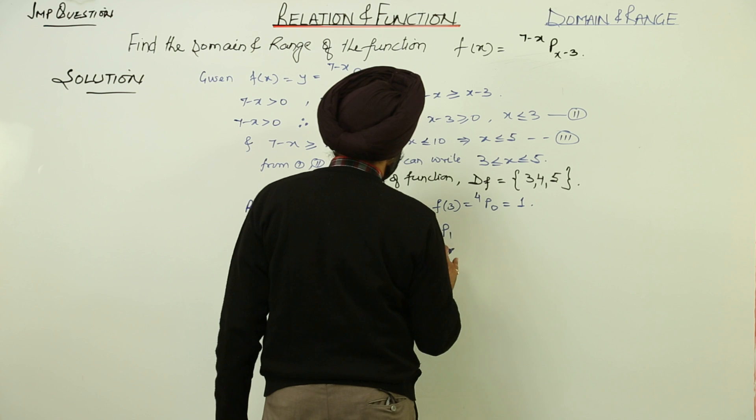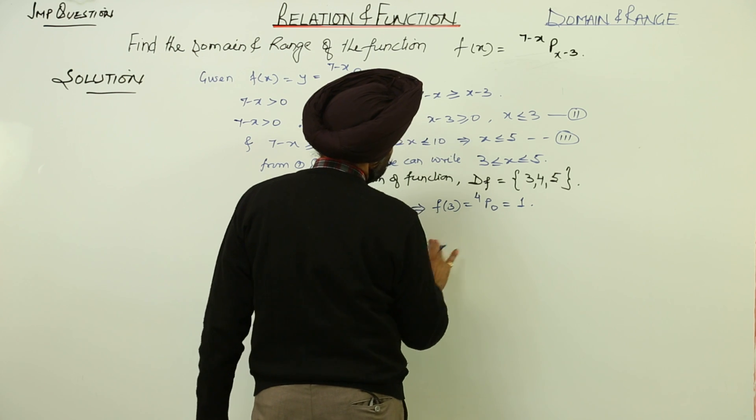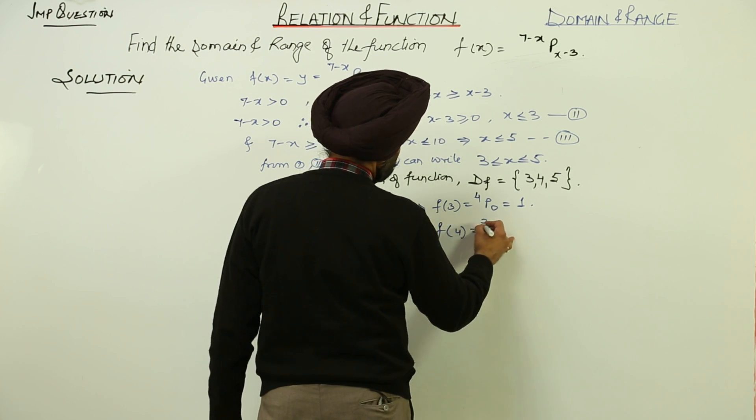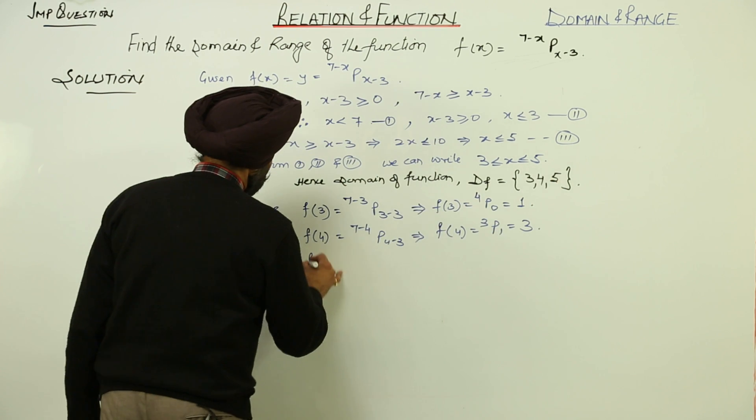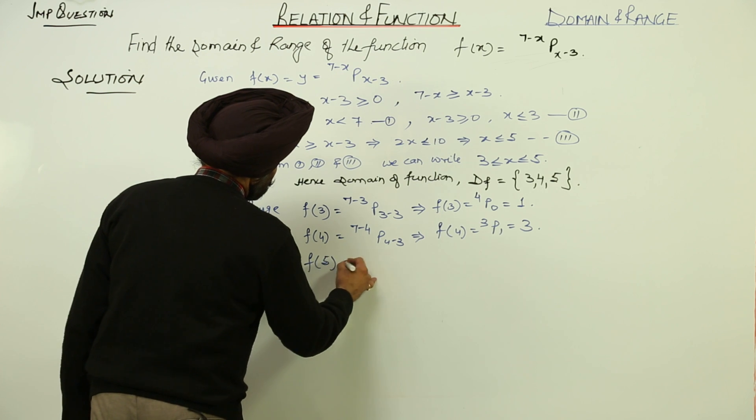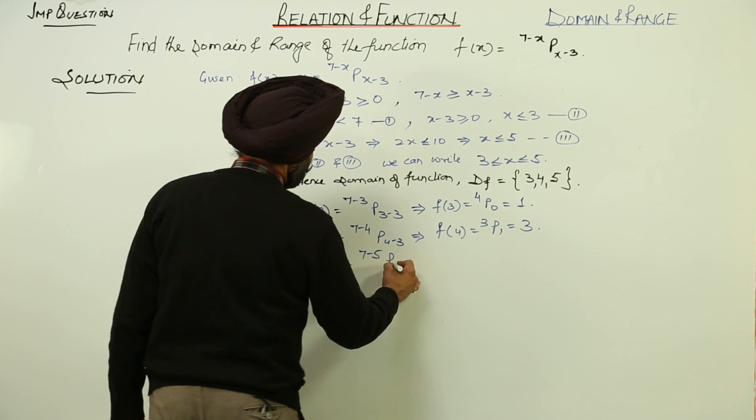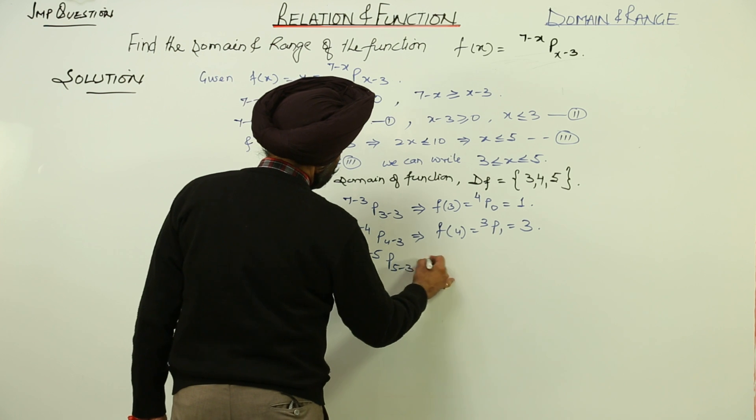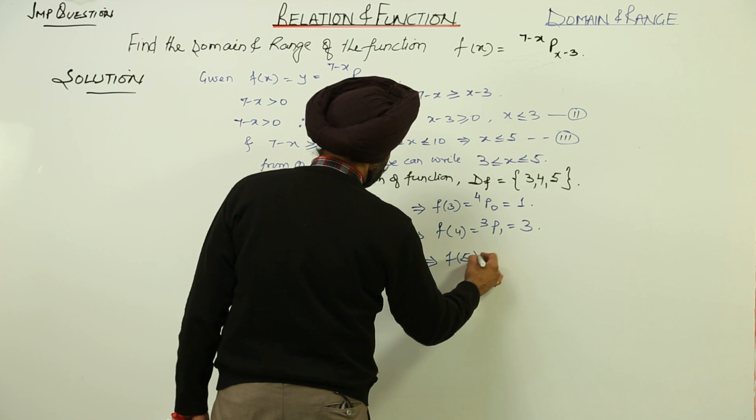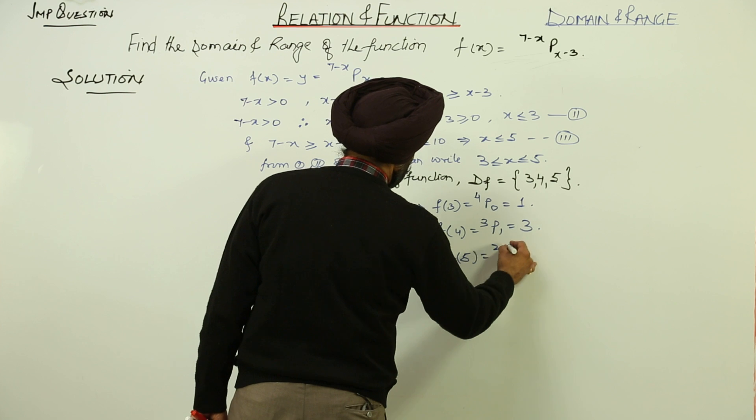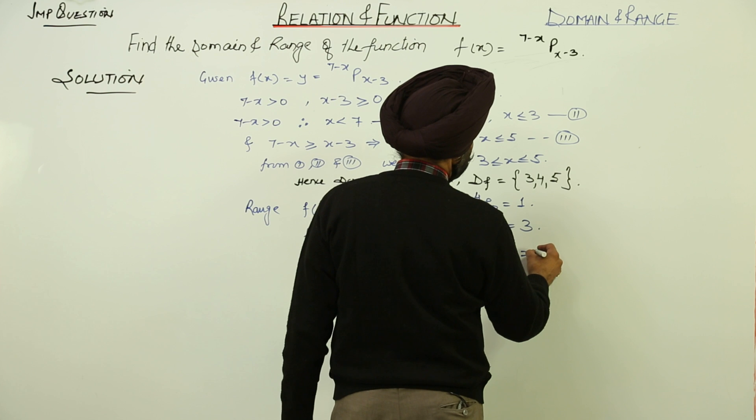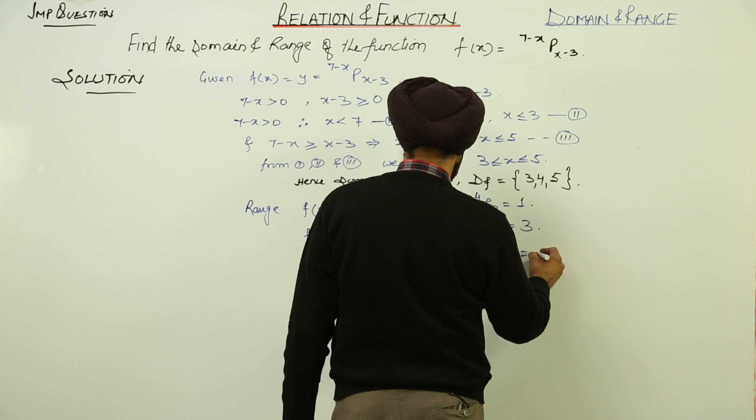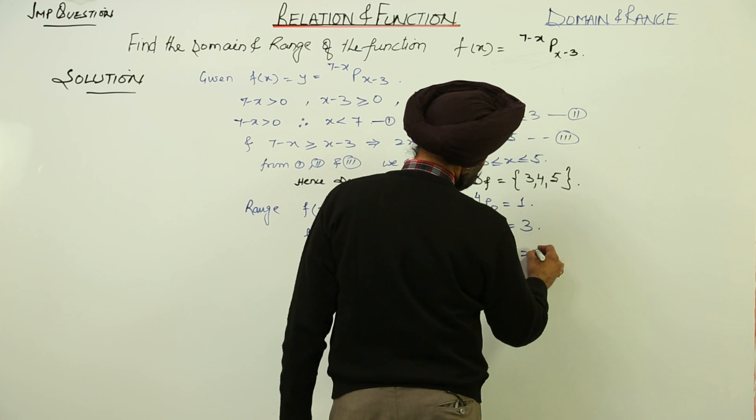We will be writing it like this. f(4) is equal to 3P1 and 3P1 is 3. f(5) is equal to 7 minus 5 permutation 5 minus 3. For f(5), we are having 2P2 and 2P2 is 2.